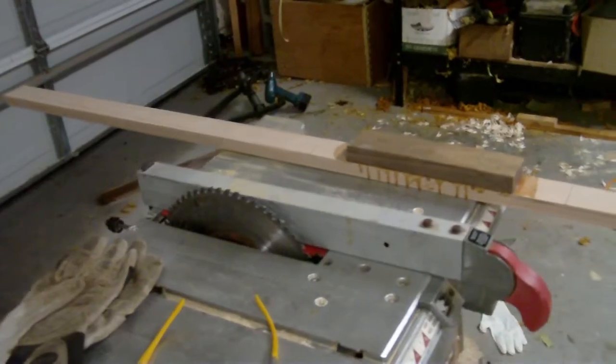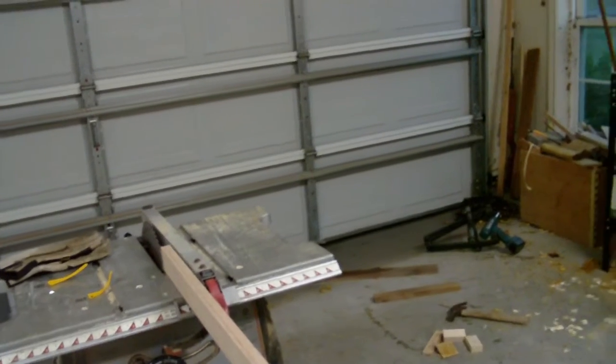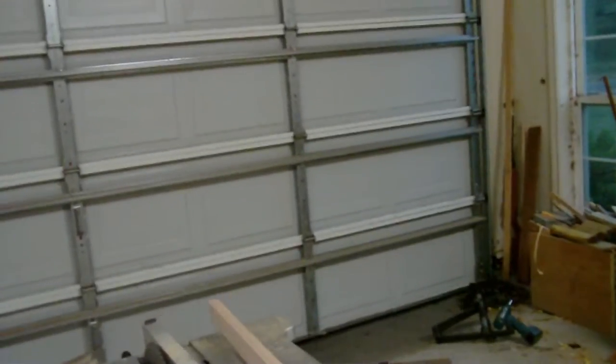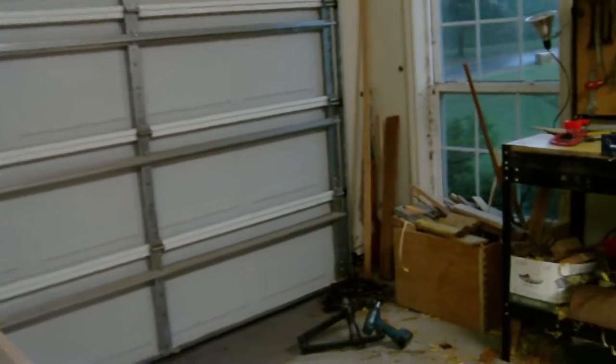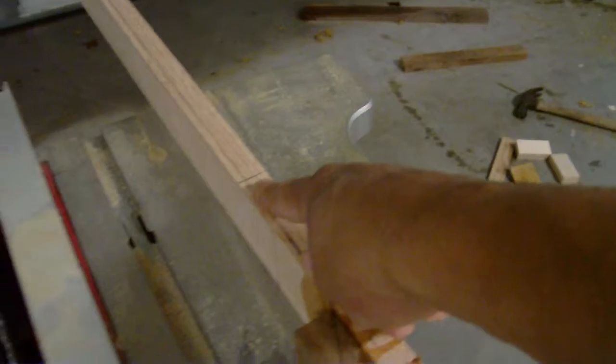We're going to take our board stave and run it right up against the fence, being very careful. Your hands should come nowhere near the blade. We're going to stop about five inches from the end to allow for the curvature of the blade.